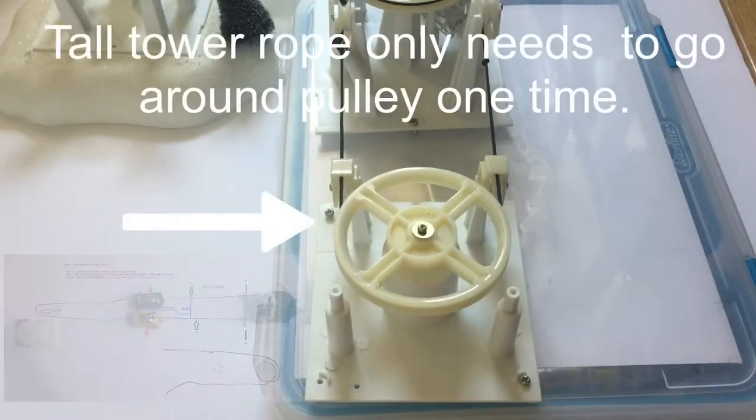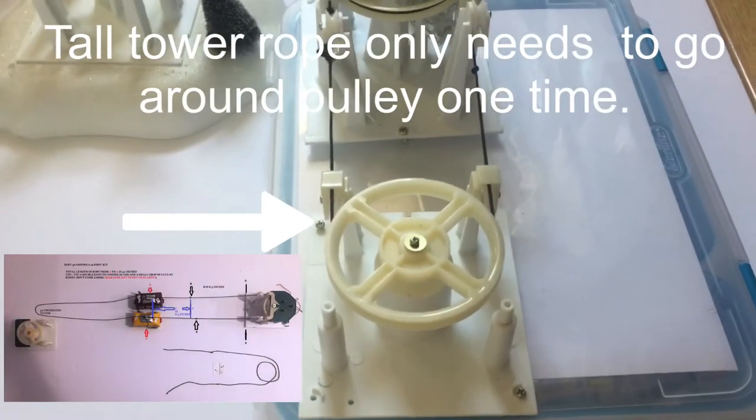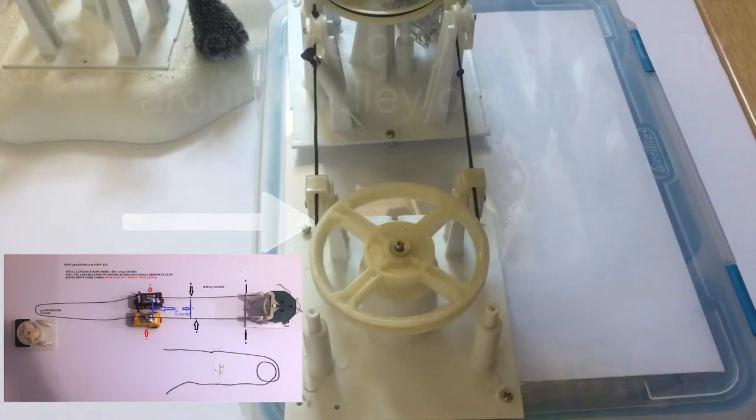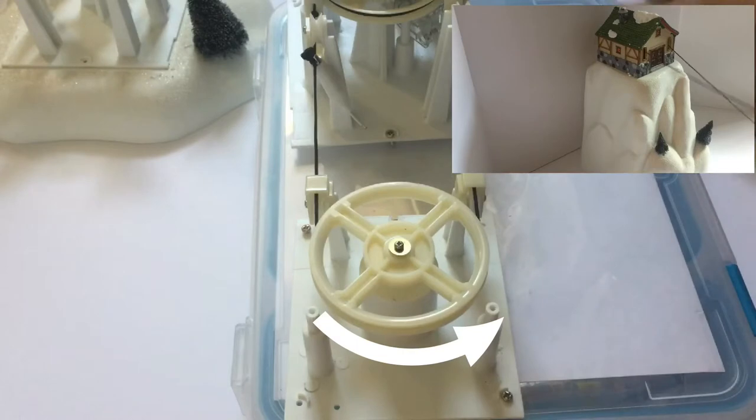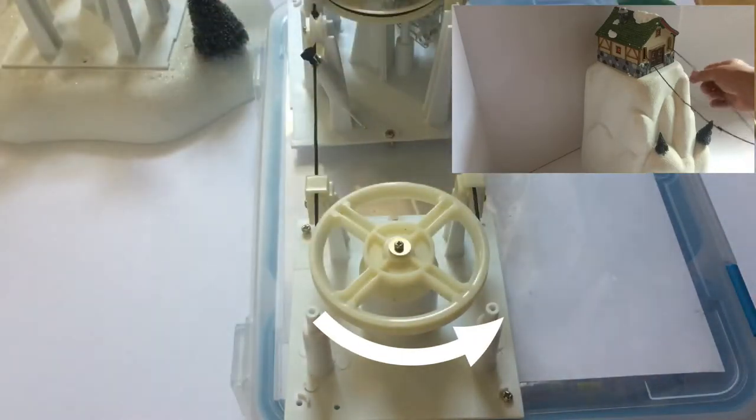Now, for the other side, which is a tall tower, it only wraps around once. Just one loop, because it's not on the motor side and it's just follower.